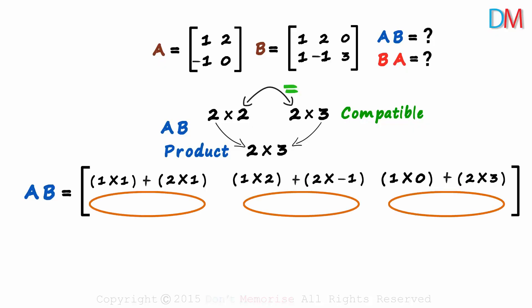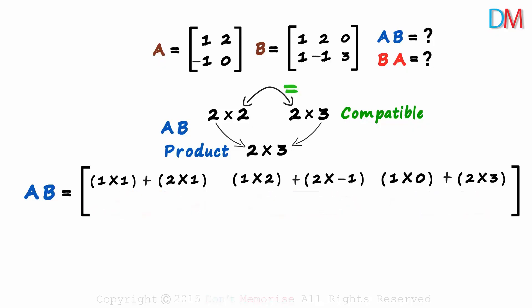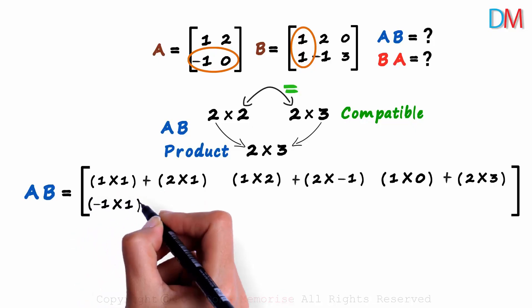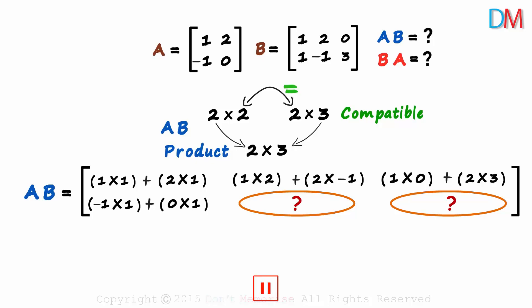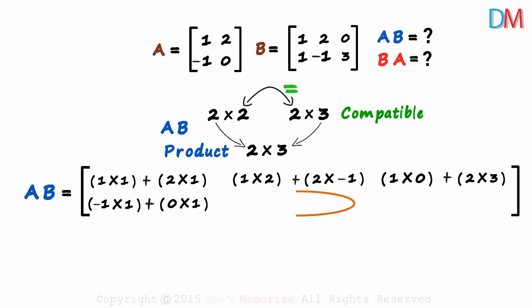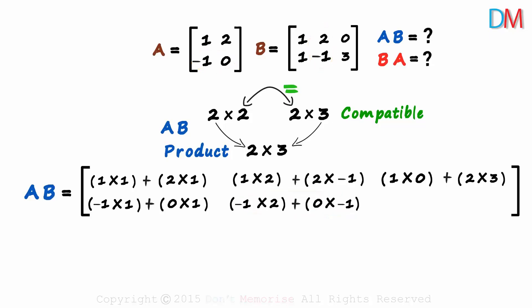There are three more elements to find. For the two-one element, we multiply the second row with the first column: minus one times one plus zero times one. Why don't you try finding the elements in the remaining two positions? For the two-two element, we multiply the second row with the second column, and for the two-three element, we multiply the second row with the third column.